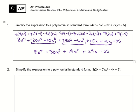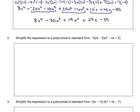Moving on to problem number 2. Problem 2 asks us to simplify 3 times the quantity 2x minus 5, times the quantity x² minus 4x plus 2. We have three terms being multiplied together. We'll start by multiplying the first two terms: 3 times 2x minus 5 is 6x minus 15.